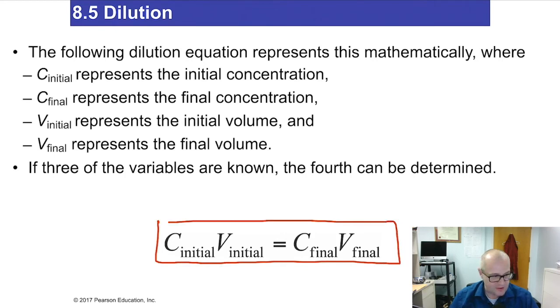Here's the formula you might want to write down in your notes. C initial, V initial equals CF VF. I usually write it like this. CᵢVᵢ equals CF VF, where I stands for initial and F stands for final. So we have initial concentration, initial volume, final concentration, final volume. Easy enough. It looks just like Boyle's law. And it acts like Boyle's law. It's very similar to Boyle's law, to be honest with you.